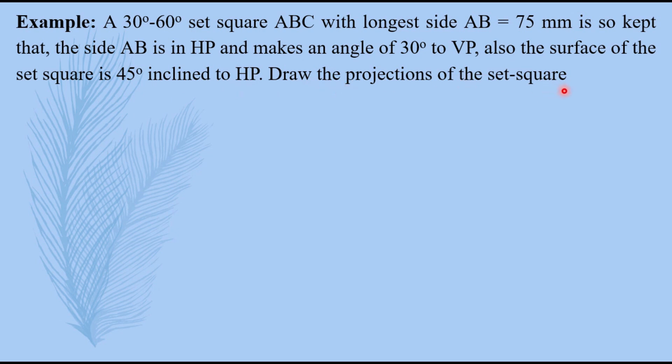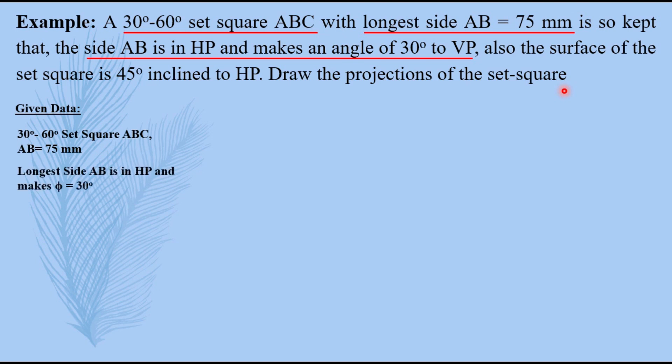So let's write down the given data first. 30 degree 60 degree set square ABC, longest side AB equals to 75 mm. Side AB is in HP making an angle of 30 degrees to VP. Surface of the set square is 45 degrees inclined to HP, that is theta equals to 45 degrees.